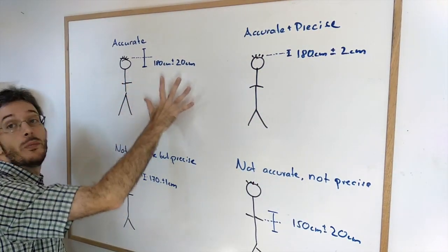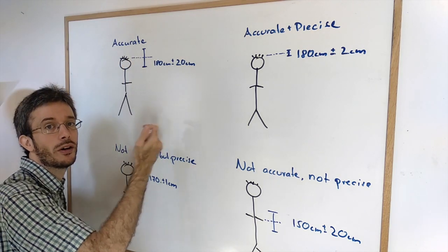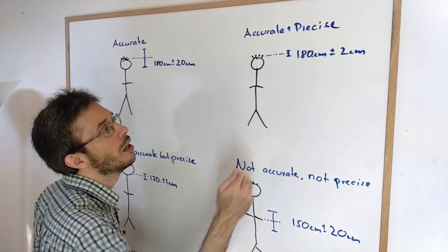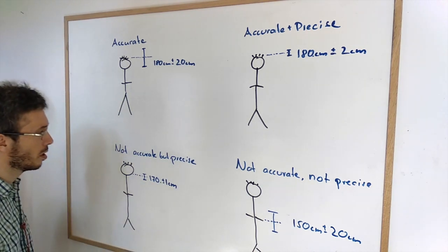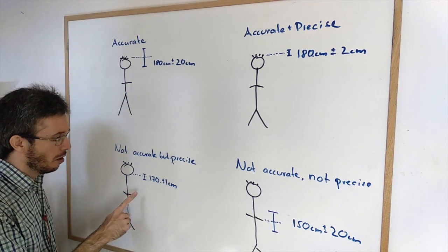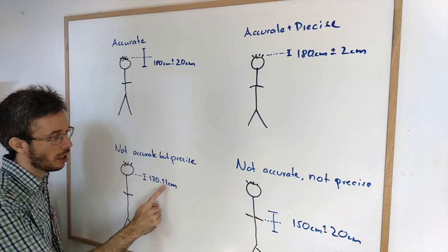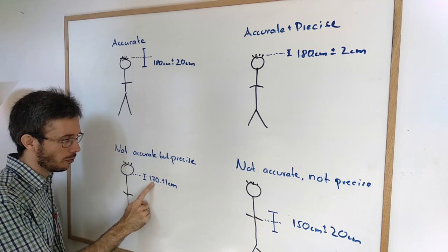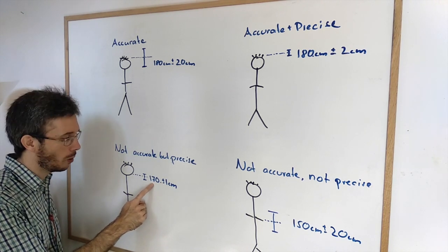So we're going to settle first for being accurate and then we think of okay how can we improve our measurement methods so we can improve on that precision. Now there are two other possible outcomes. One is this one here when I'm not accurate but very precise. So again I'm giving a very low uncertainty but the value on which I apply this uncertainty is way off the real value.